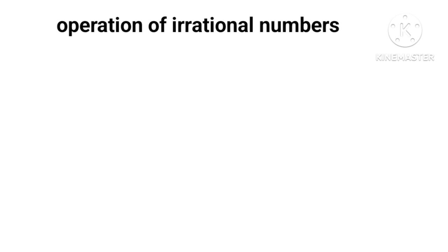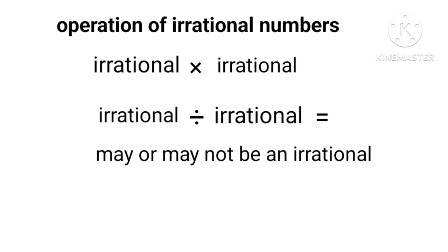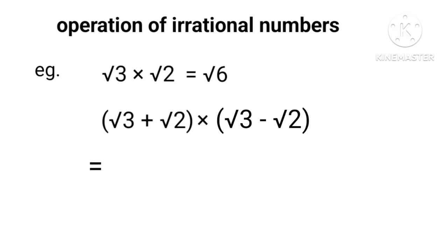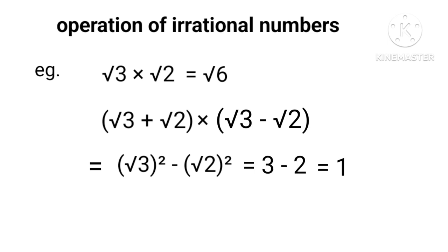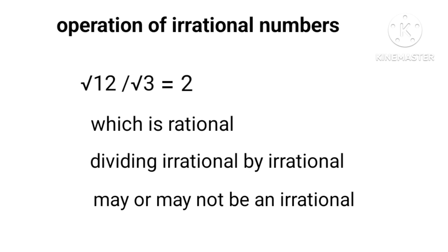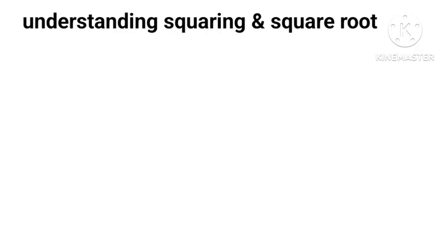Now let us see what happens when we multiply and divide two irrationals. The outcome may or may not be irrational. For example, when we multiply √3 into √2, the result is √6, which is irrational. But when we multiply (√3 + √2) into (√3 − √2), we get √3 squared minus √2 squared equal to 3 minus 2 equal to 1, which is rational. Dividing √12 by √3 gives √4 equals 2, which is rational. Hence, dividing an irrational by an irrational may or may not be irrational.